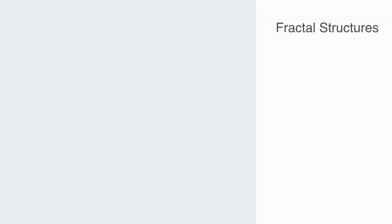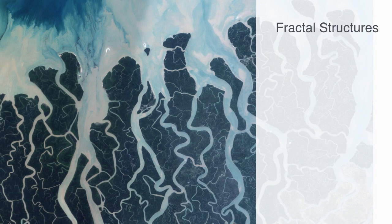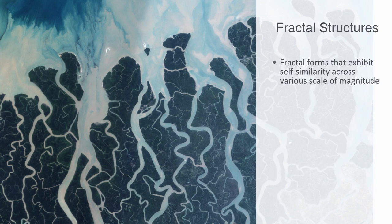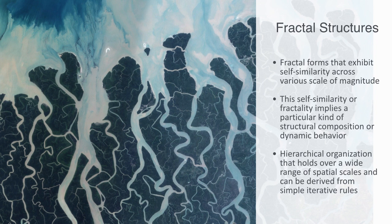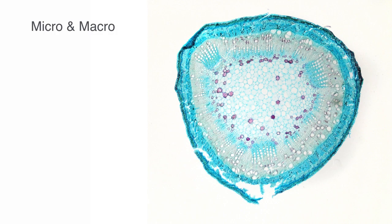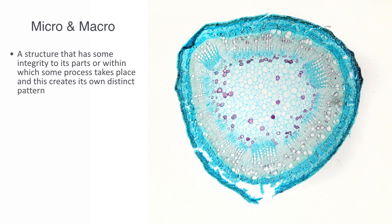This hierarchical nested structure is seen within fractal forms that exhibit self-similarity across various scales of magnitude. Examples within ecosystems include everything from proteins and DNA to the capillaries in mammals, tree canopies, river networks, and mountain ranges. This self-similarity, or fractality, implies a particular kind of structural composition or dynamic behavior — that the fundamental features of the system exhibit an invariant hierarchical organization holding over a wide range of spatial scales, derived from simple iterative rules. Through this process, we get the emergence of a new level of organization.